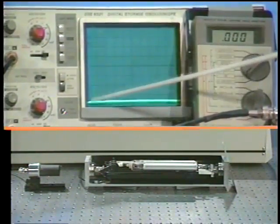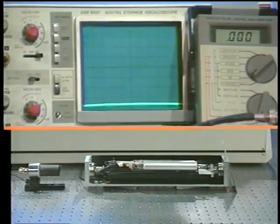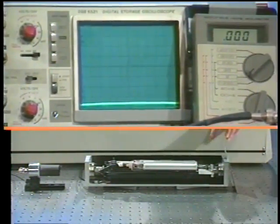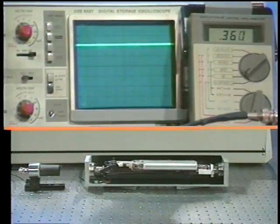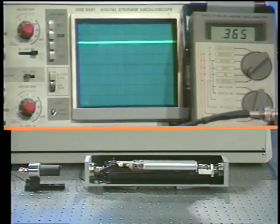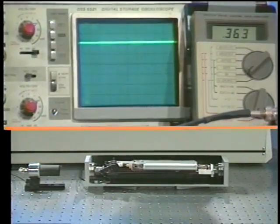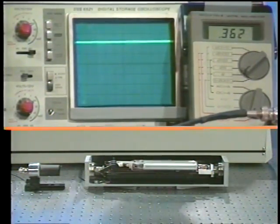And also, hopefully, then the output of the scope here, this will be our zero on the oscilloscope. Now, if I take this card away, let the light go through, you can see that now the output on the scope has changed. And the meter reads around 364 or thereabout, which is the output of the laser.